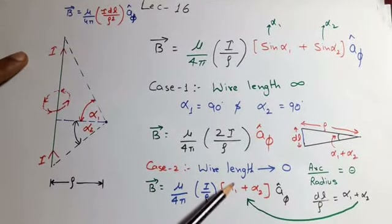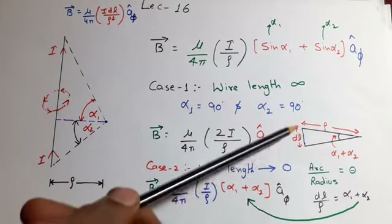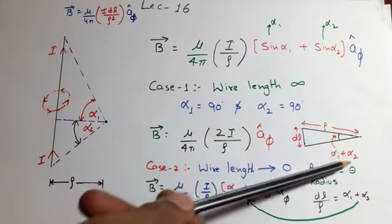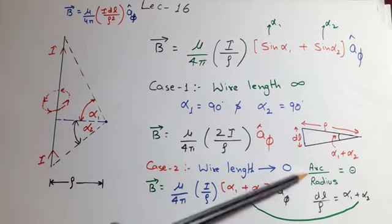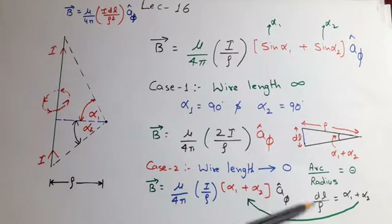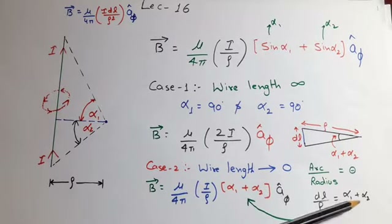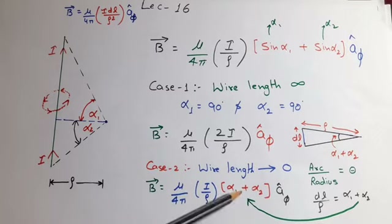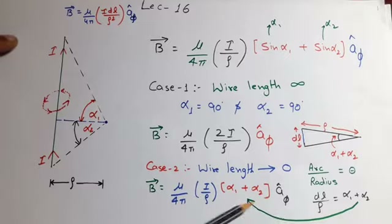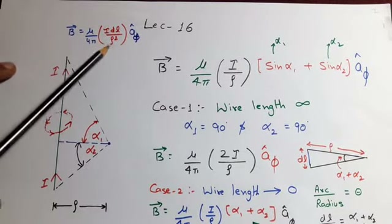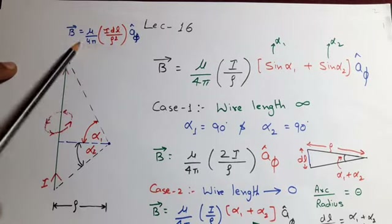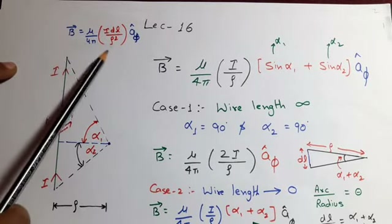From the triangle, this small length element is dl, this distance is rho, and this angle is alpha 1 plus alpha 2. We can use the relation arc upon radius equals theta, which means dl upon rho equals alpha 1 plus alpha 2. Substituting this value, it becomes B equal to mu upon 4 pi into i·dl upon rho-square. And this is the exact expression which we observe from Biot-Savart's law — this we should take care of.